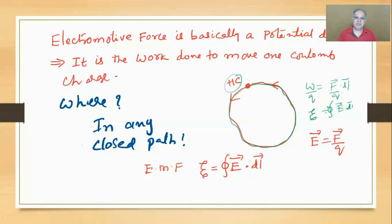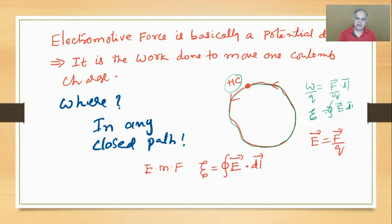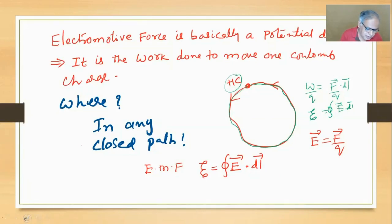That non-conservative field exists inside the battery, not all along the circuit. It does work, and I'll come back to that when I discuss how current flows in a metal wire connected to a cell. When you define EMF as work done in a closed path by the electric field, remember this is going to be a non-conservative electric field whose work will not become zero.